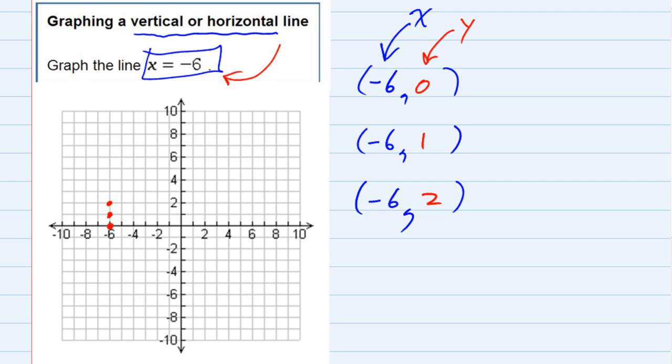So if I were to connect these dots, I would see that x equals negative six is a vertical line through the value negative six.